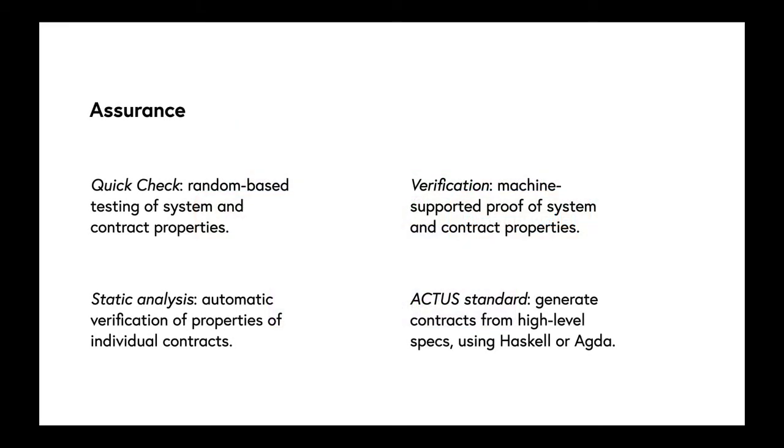We can provide assurance in a number of ways. Generally, we can use QuickCheck, the random-based testing approach. Because contracts are finite objects, we're able to perform static analysis. We have a model in a theorem-proving system that allows us to build machine-supported proofs of system properties. And finally, we're able to generate contracts from high-level specs.